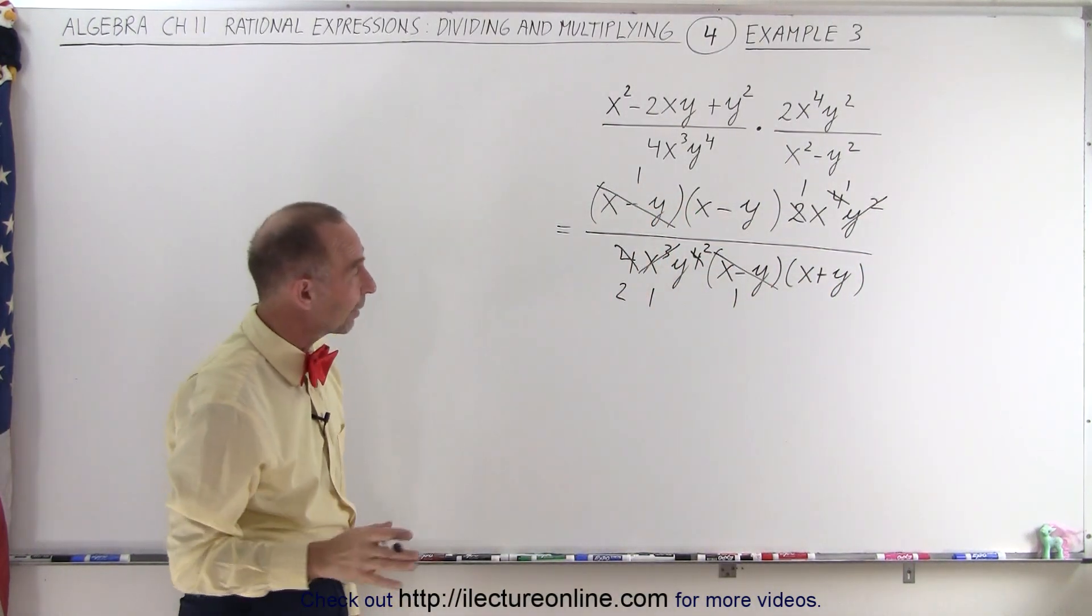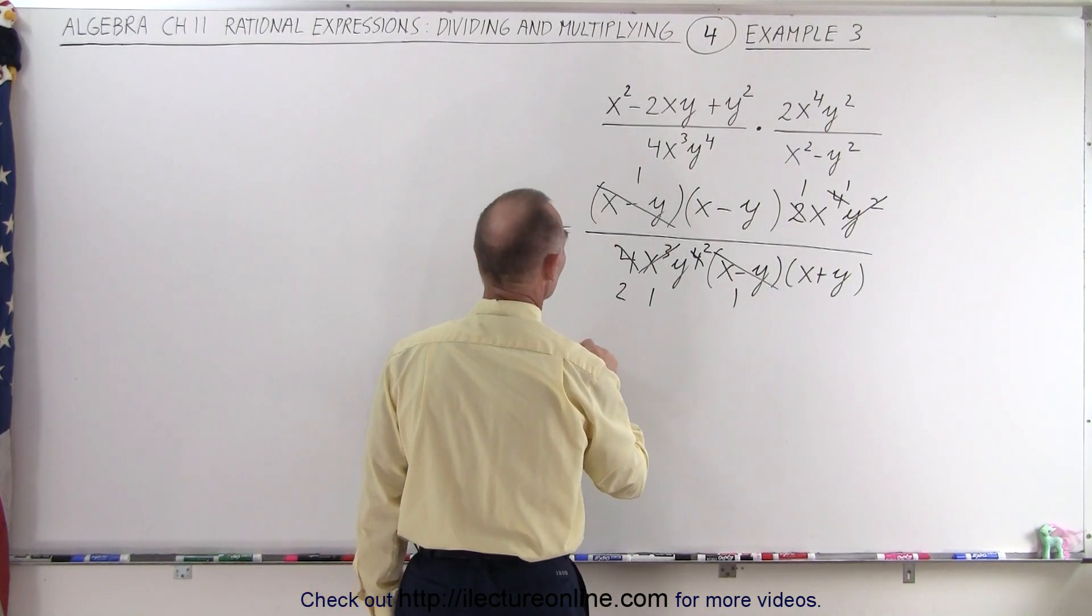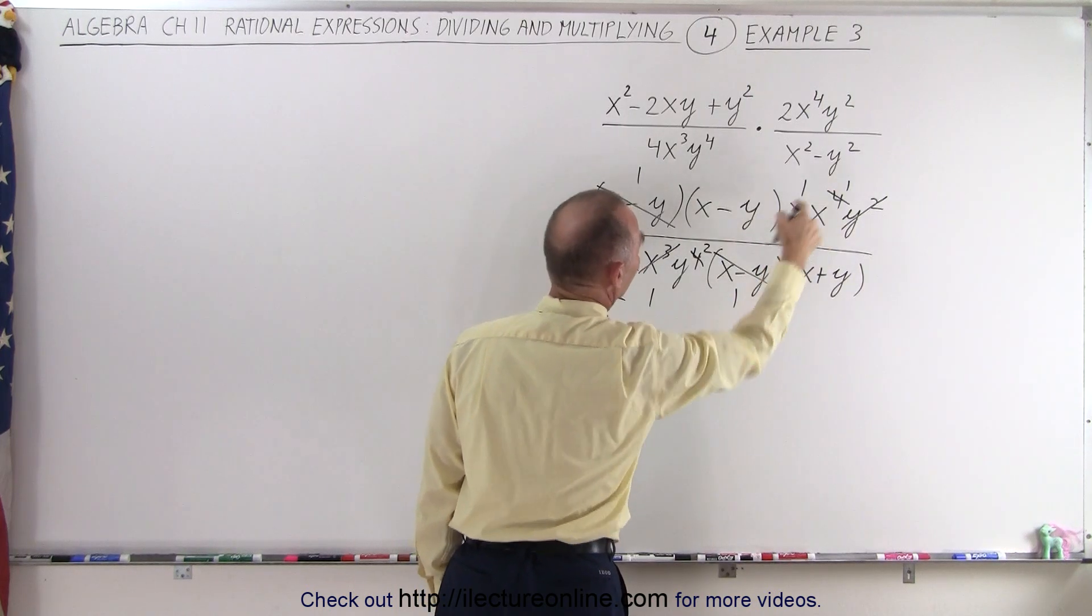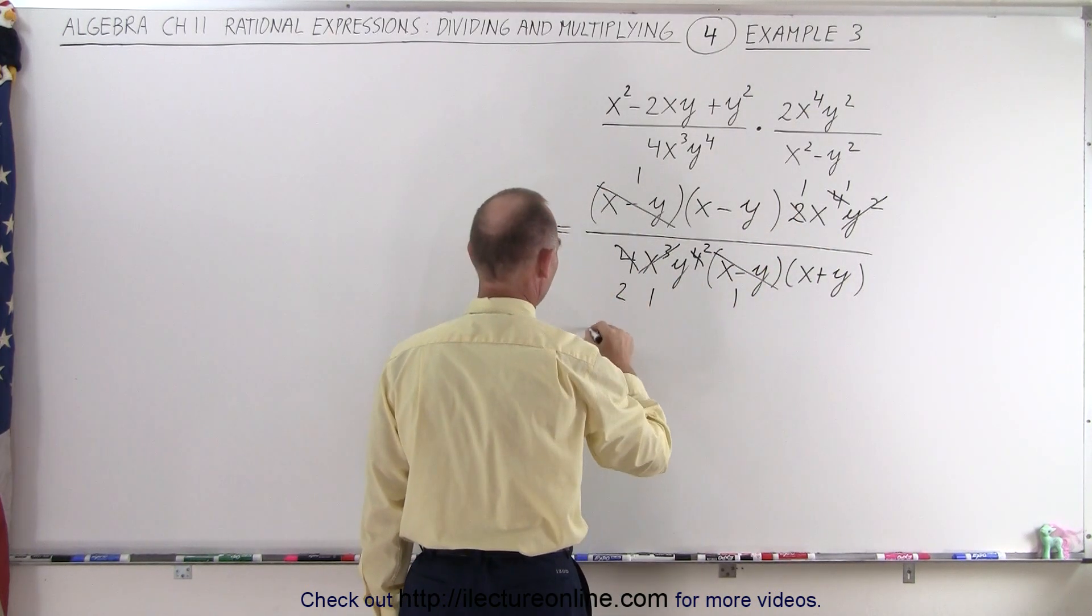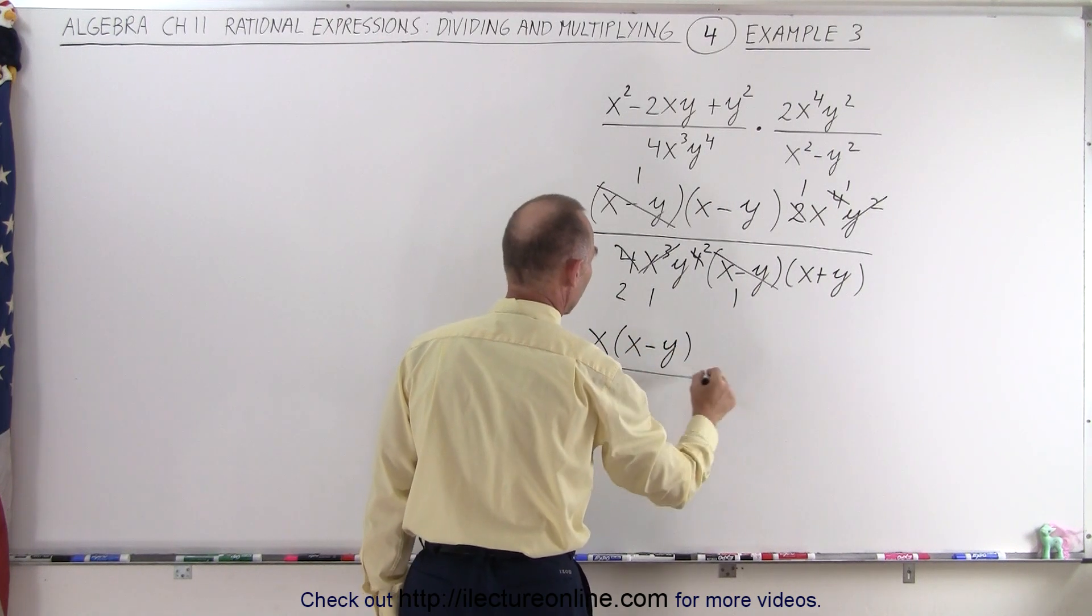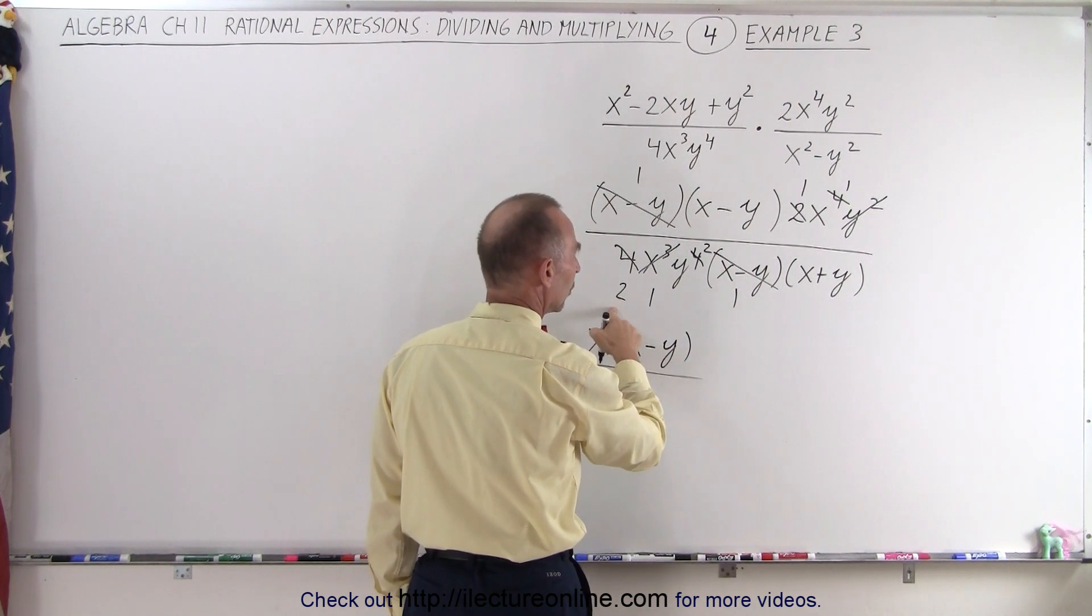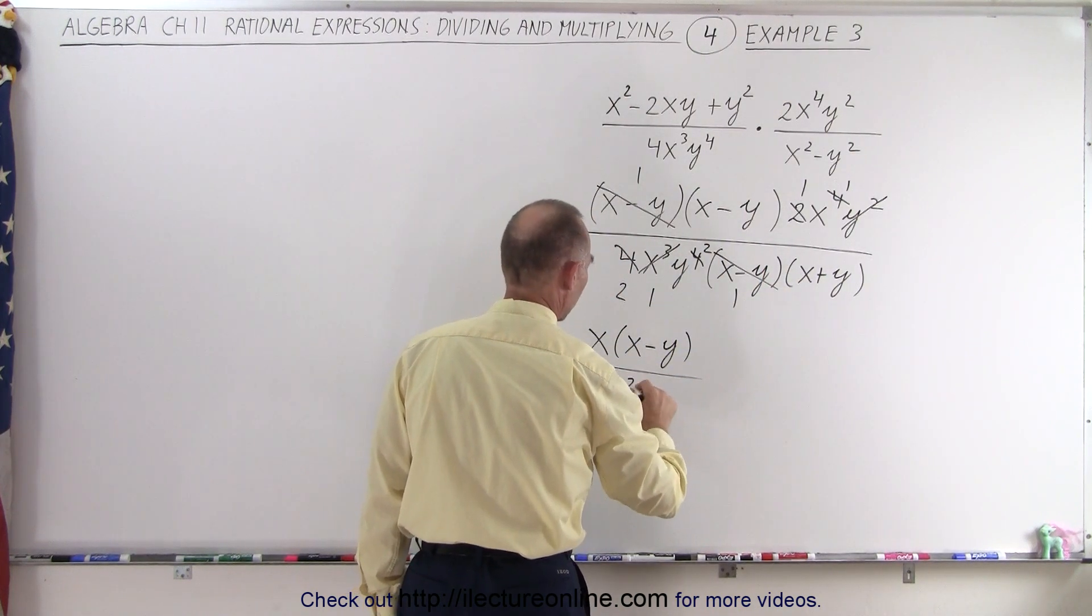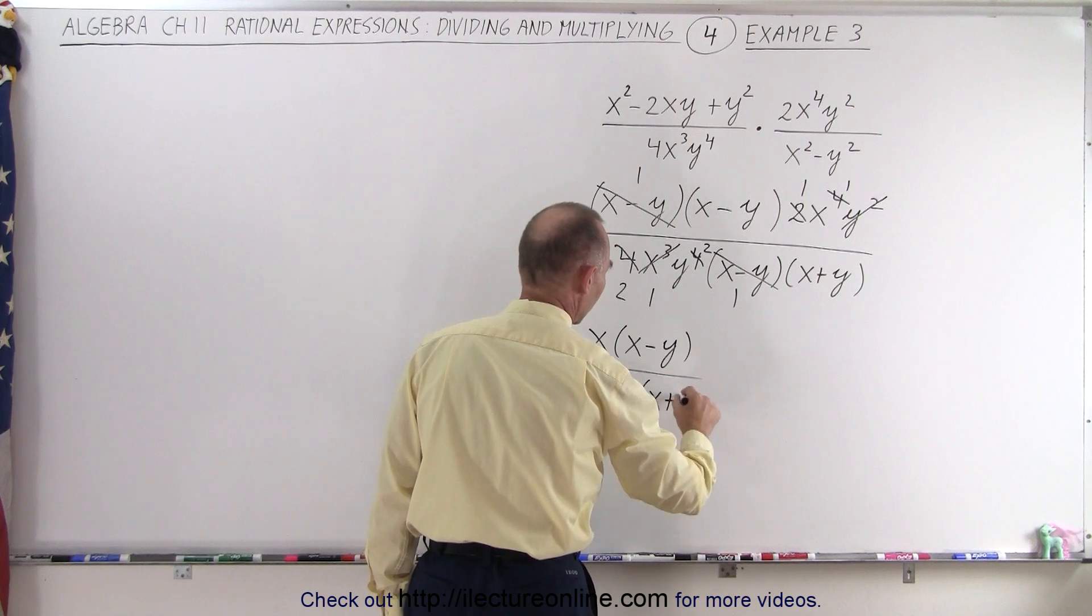Now we have simplified as much as we can. Let's see what's left over. So in the numerator, we have x to the first power times x minus 1. In the denominator, we have a 2, we have a y squared, and an x plus y. So 2 times y squared times x plus y.